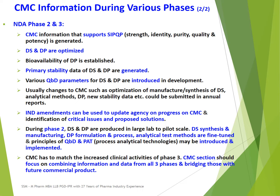During Phase 2, drug substance and drug products are produced at large lab to pilot scale. Drug substance synthesis and manufacturing, drug product formulation and process, and analytical test methods are fine-tuned. Principles of quality by design and process analytical technologies may be introduced and implemented during Phase 2. In Phase 3, CMC must match the increased clinical activities. The CMC section should focus on combining information and data from all three phases and bridging those data with future commercial product data.